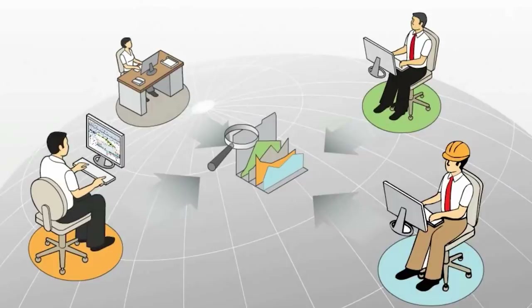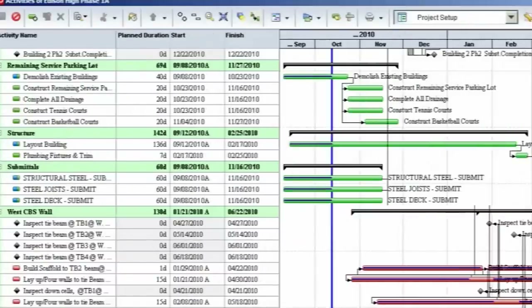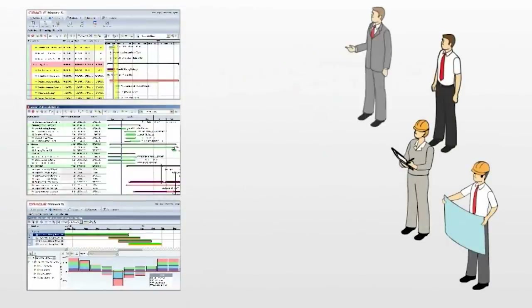Software number three is project management software. Project management software is pretty self-explanatory — it helps you manage your projects. So if you're a big-time architect and you have lots of projects, this software is essential. A good example of a project management software is Primavera. With Primavera you could balance resource capacity, plan schedule, and control complex projects and all those things.